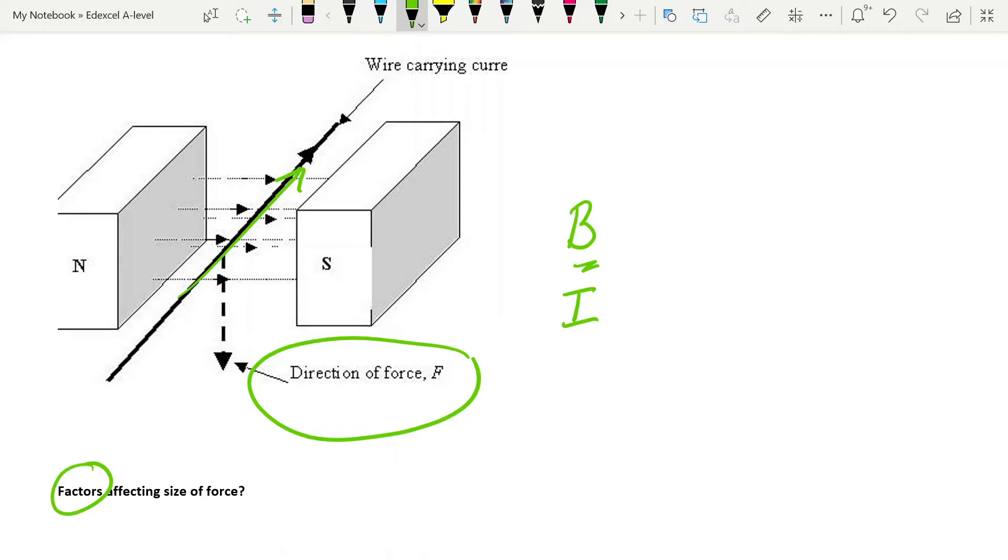The only one that's slightly less obvious is the length of the wire that's inside this magnetic field. So L as in the length of the wire in the field is our third factor that affects the size of the force.